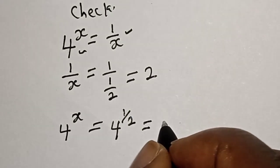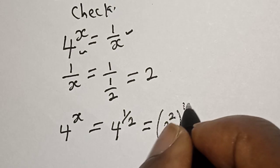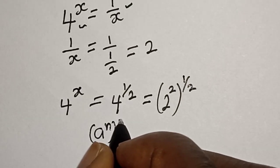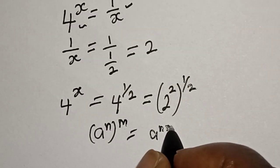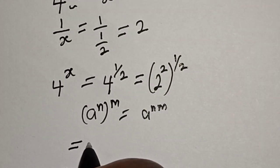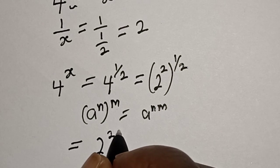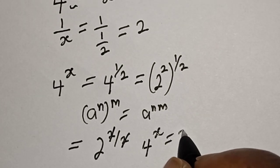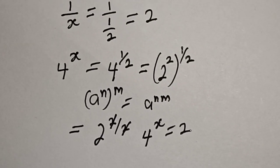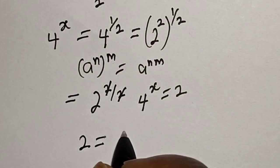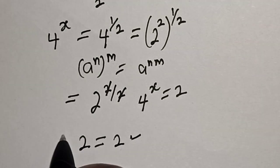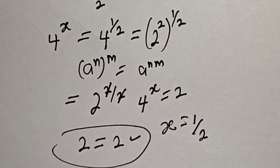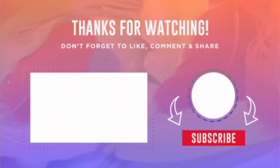This is equal to 2 raised to power 2, to the power of 1 over 2. Using the rule that a raised to power n, to the power of m, equals a raised to power n times m, this equals 2 raised to power 2 over 2, which equals 2. Therefore the left hand side 2 equals the right hand side 2. We satisfy the given equation at x equals 1 over 2. If you enjoyed the class, please don't forget to like, share, comment and subscribe. Thank you.